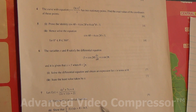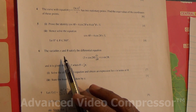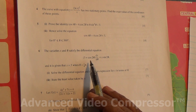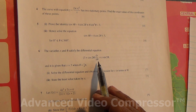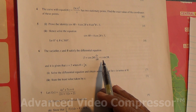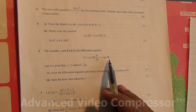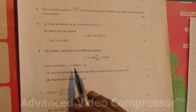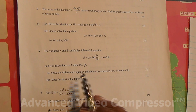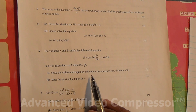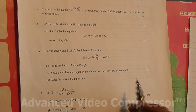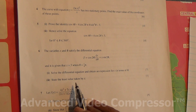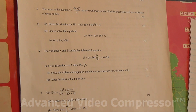Question number 6. The variables x and theta satisfy the differential equation: (3 + cos2θ) dx/dθ = x·sin2θ. It is given that x = 3 when θ = π/4. Solve the differential equation and obtain an expression for x in terms of theta (7 marks), then state the least value taken by x (1 mark).